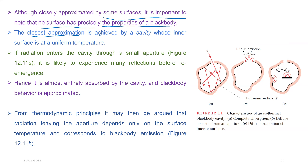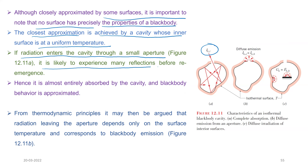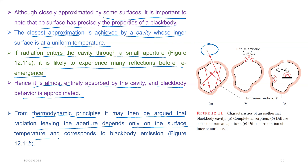The closest approximation to a black body is achieved by a cavity whose inner surface is at uniform temperature. If radiation enters the cavity through a small aperture, it is likely to experience many reflections before re-emergence, hence it is almost entirely absorbed. From thermodynamic principles, the radiation leaving the aperture depends only on the surface temperature and corresponds to black body emission, so whatever emission i_lambda,e equals the monochromatic intensity of the black body radiation.